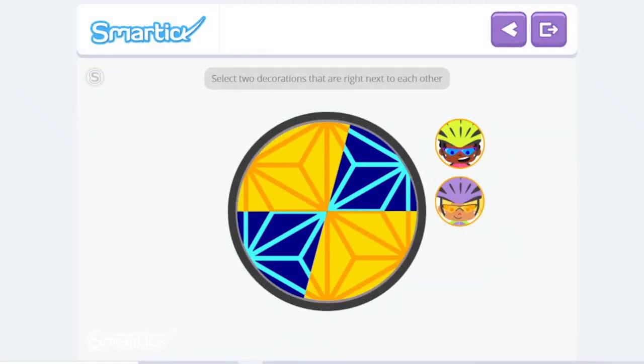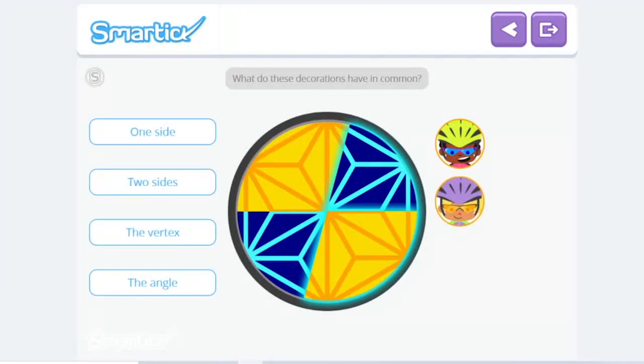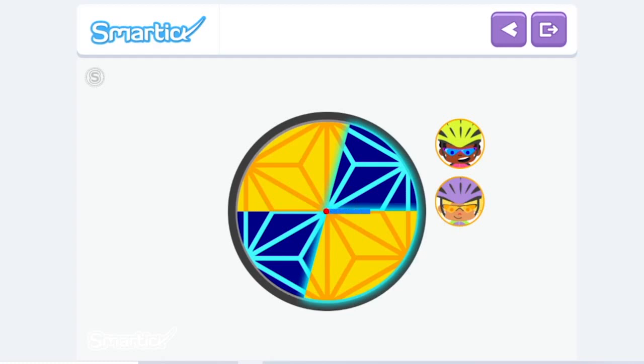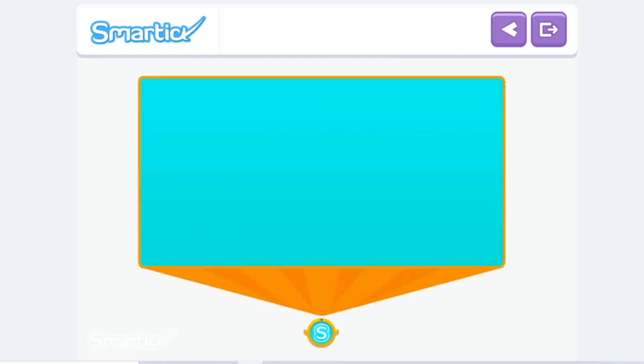Now, select two decorations that are right next to each other. Okay, so this one and this decoration. Perfect! What do these decorations have in common? So, these two decorations have, well, the vertex. So, let's select that. And, well, one side. So, one side. Of course! They have their vertex in common and one side. The consecutive angles that have the vertex and one side in common are consecutive angles.